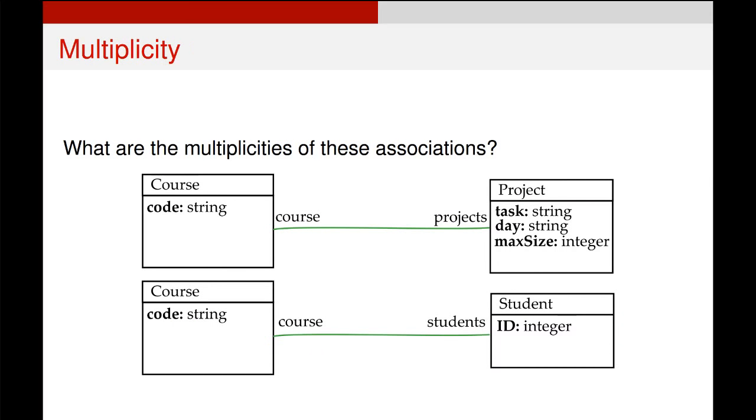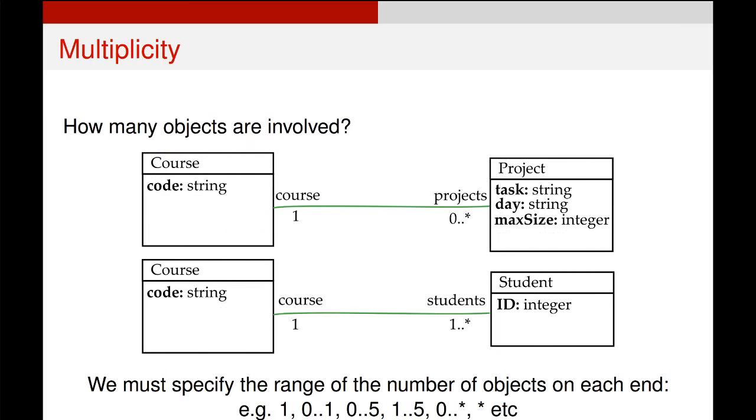Finally, we can look at the multiplicities of some of these associations, and they're reasonably simple. This multiplicity here means for each project, every project must have one course. It can't have no courses, and it can't be attached to more than one. On the other hand, a course here, every course can have no projects or can have as many projects as you want, and we signify that by writing zero dot dot star. A shorthand for this is just writing the star by itself that we've got down the bottom. They both mean exactly the same thing.